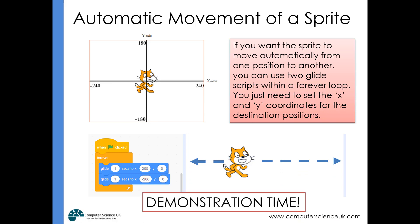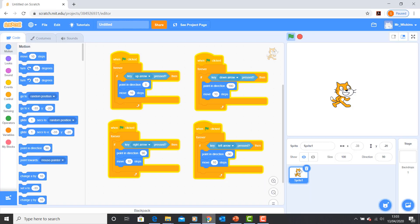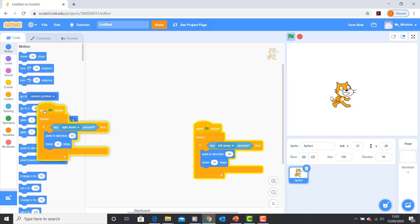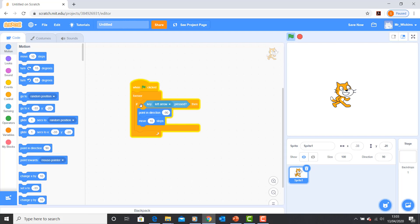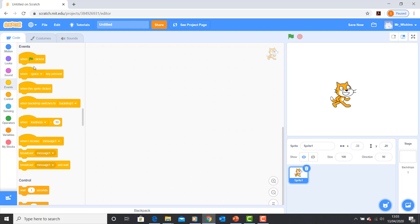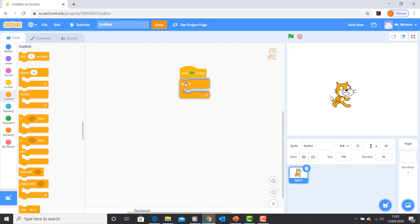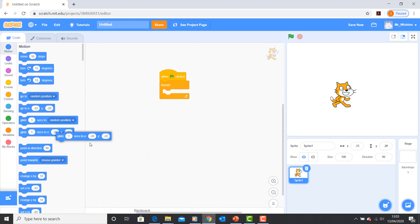Let's look at how we can program that in Scratch. Let me quickly get rid of these scripts so I can demonstrate automatic movement. When the green flag is clicked, we'll forever do two motions: we're going to glide to the x coordinate of 200 and y coordinate of zero, and then we're going to glide—oh, the cat's already gone.